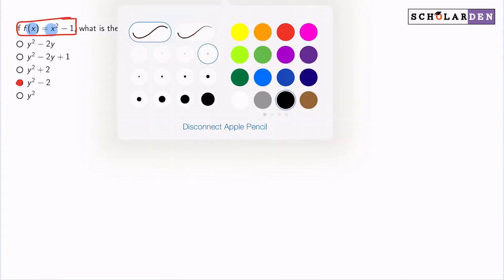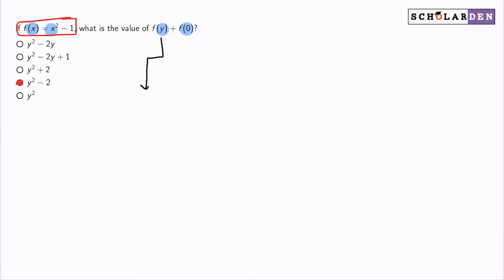So f of y will turn into, well, instead of x squared minus one, it'll now be y squared minus one.